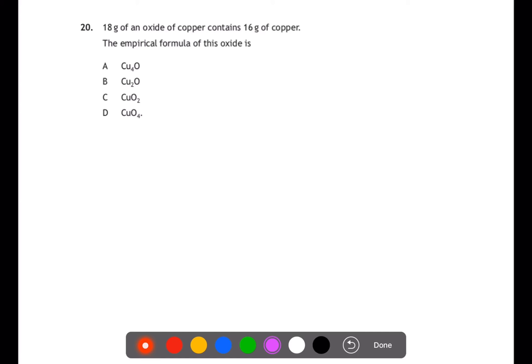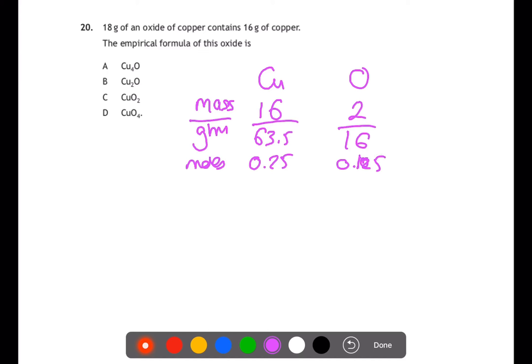Question 20. 18 grams of an oxide of copper contains 16 grams of copper. What is the empirical formula? To work out empirical formula we start with the two elements that we have. We have the mass which is 16 grams for copper and if we do 18 minus 16 we'll get how much oxygen we have which is 2. We're going to divide by the gram formula mass for each to get the number of moles. Once we have the number of moles we're going to divide by the smaller to get a ratio. And this ratio will give us the empirical formula. Here we have a ratio of 2 to 1, so Cu2O. So that gives the answer of B.